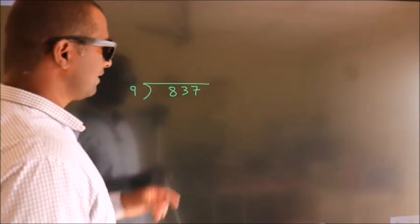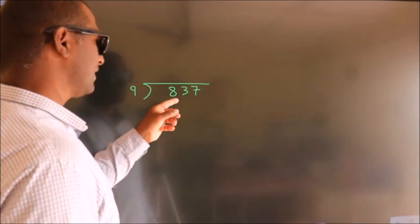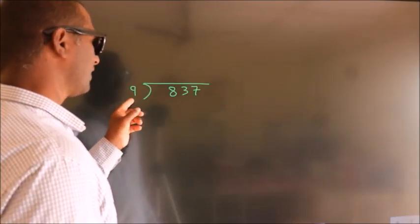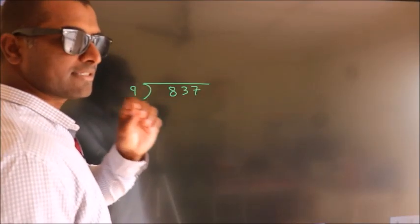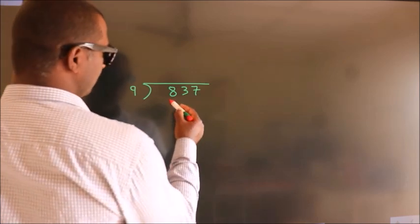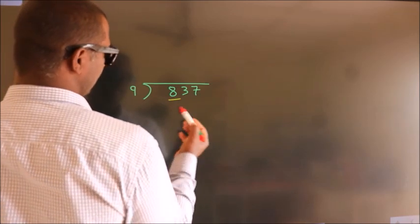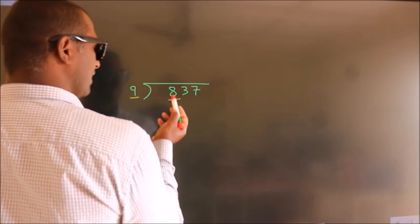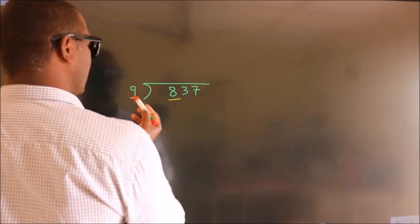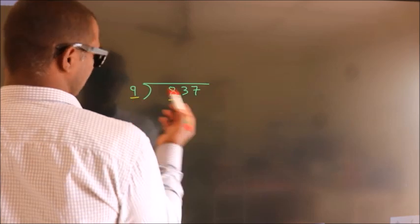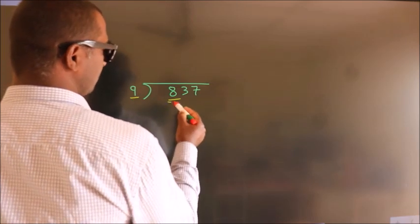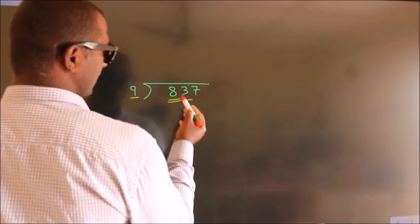How to divide 837 by 9. Here we have 8, and here 9. Since 8 is smaller than 9, we should take two numbers: 83.